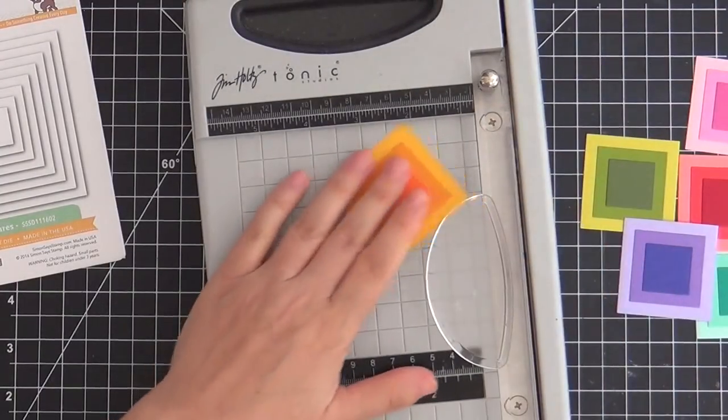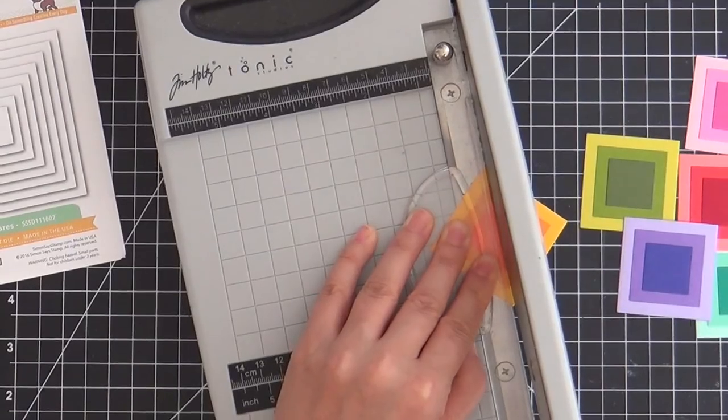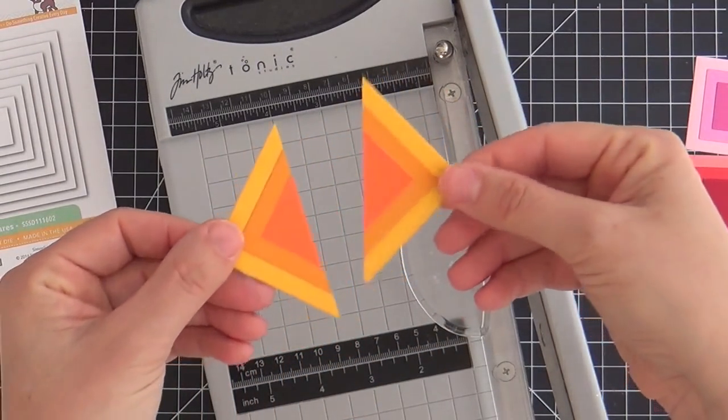So here's where it gets exciting. I'm trimming these squares in half, corner to corner, making the old beloved triangle.